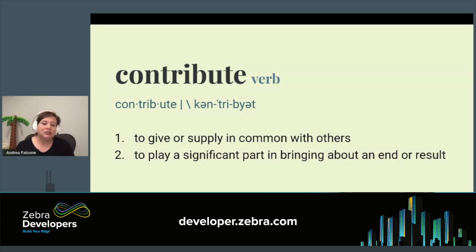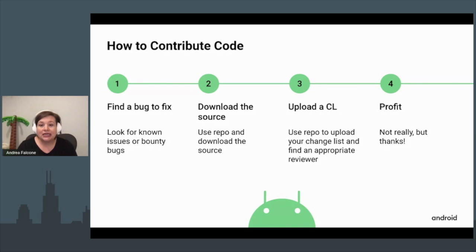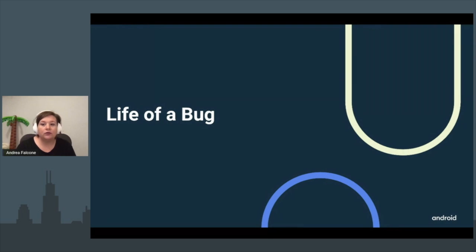Contributing to open source can mean many different things. The process of contributing to AOSP is: first, find a bug to fix — even if you're implementing a new feature, you have to file a bug for it. Then you need to get access to the tools and source code. Then you'll make, test, and upload that code change. But before we get there, let's talk about contributing in a different way.